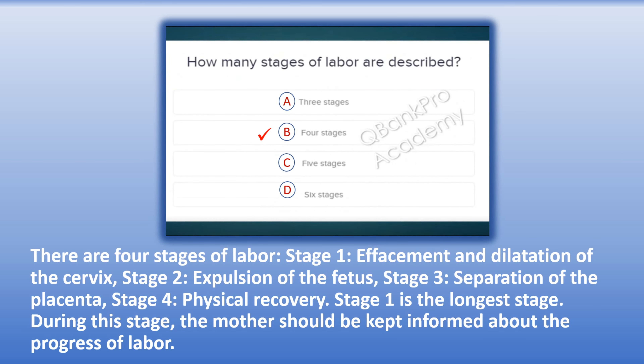The correct answer is B. Four stages. Explanation: There are four stages of labor. Stage 1: effacement and dilatation of the cervix. Stage 2: expulsion of the fetus. Stage 3: separation of the placenta. Stage 4: physical recovery. Stage 1 is the longest stage. During this stage, the mother should be kept informed about the progress of labor.